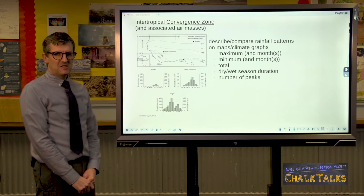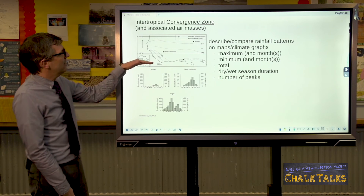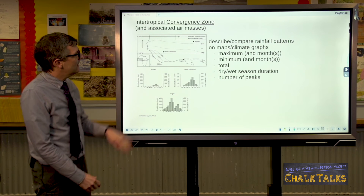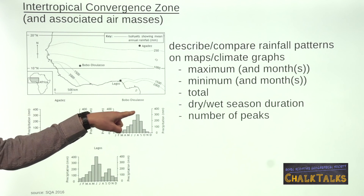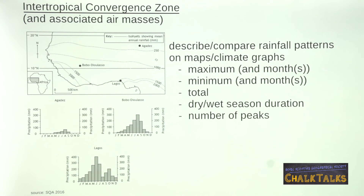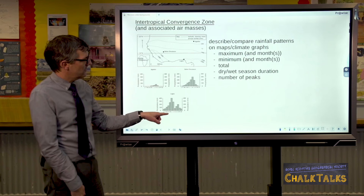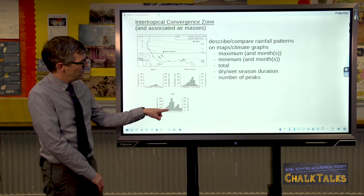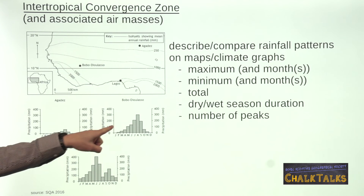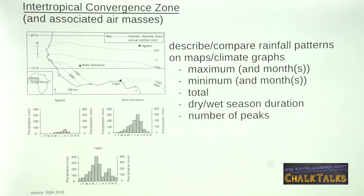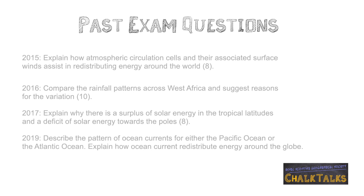You would then need to be able to explain these patterns, and that's by talking about the movement north and south of the ITCZ and the associated air masses. You need to pick out that the peaks of rainfall are likely to be when the ITCZ with the convectional rainfall comes in. So this explains the double peak as the ITCZ moves north and then moves south again. In behind that comes the tropical maritime air mass, which explains the wet season. The dry seasons are caused by the ITCZ moving south and bringing the tropical continental air mass, making these areas particularly dry.